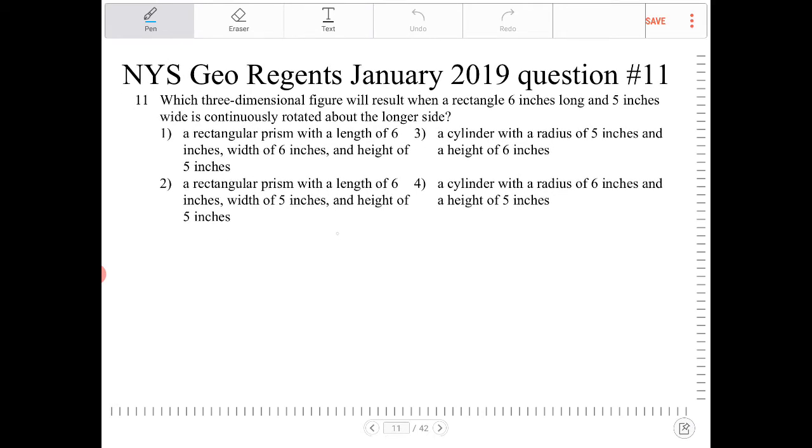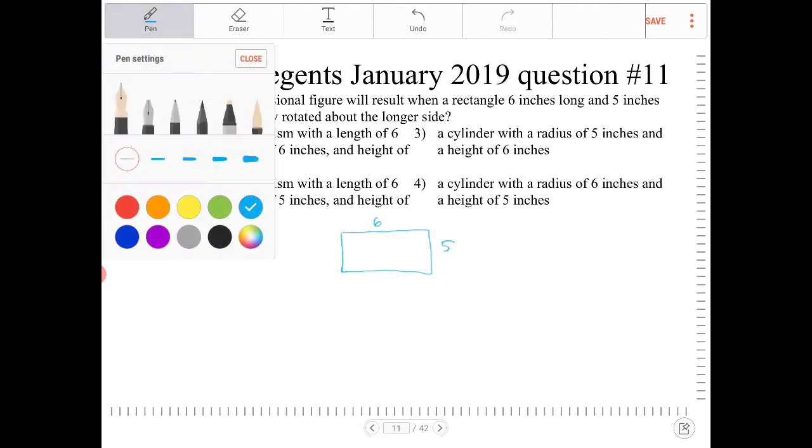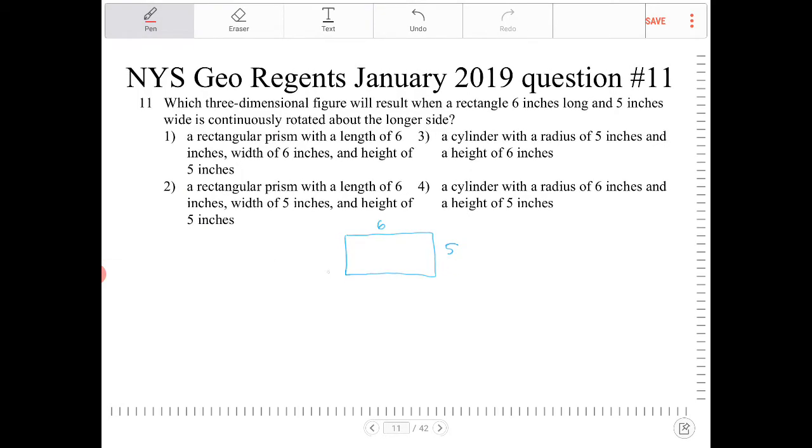So if I have a rectangle and the rectangle is rotated along the longer side, that means this edge here, which I'm going to use a thicker pen here, so I'm going to be rotating along that edge.